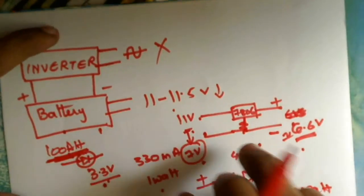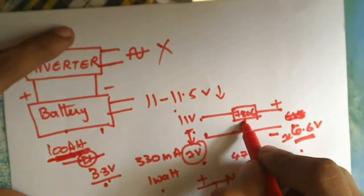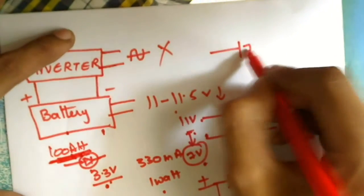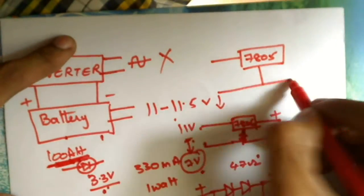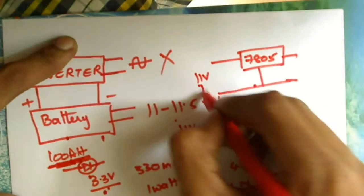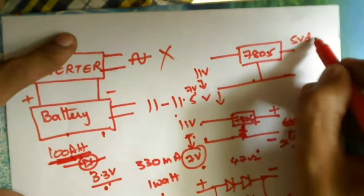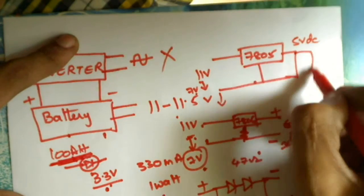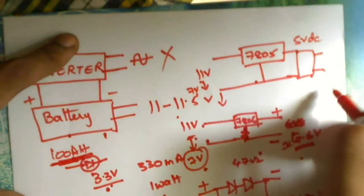If we have to use this same battery for mobile charging, what we'll do is instead of 7806, what we're going to connect is 7805 regulator without a resistor. So when we give this 11V or 7V the output will be 5V DC. So what we can do here is we can connect a USB pin here, so that we can connect a USB cable and charge a mobile.